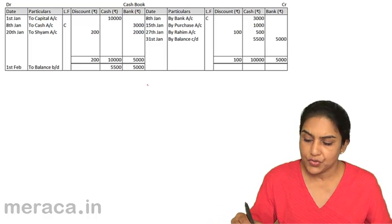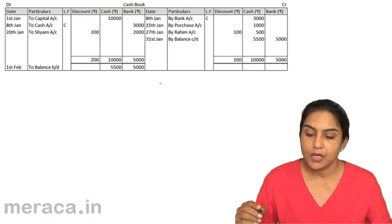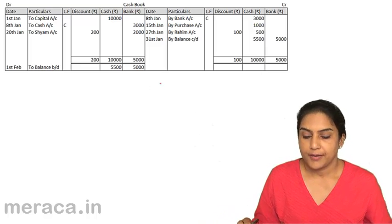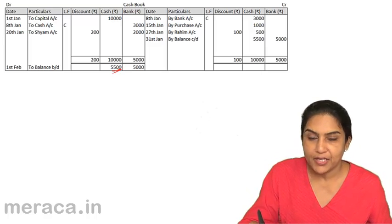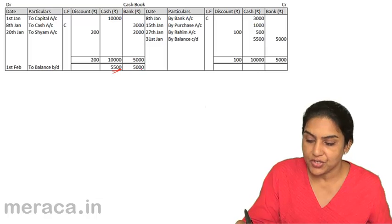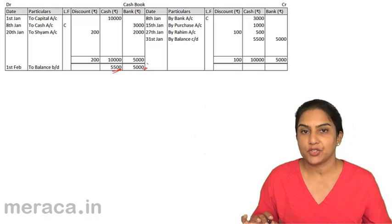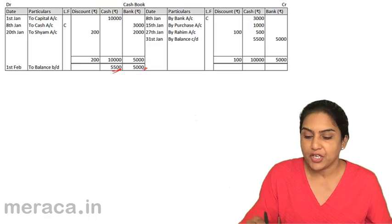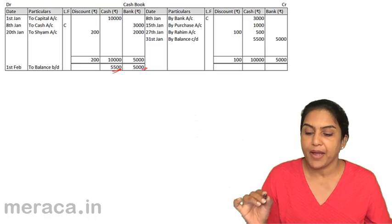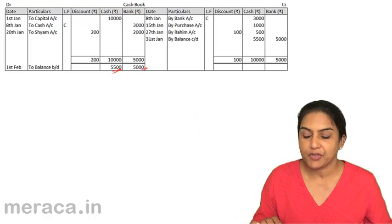How is posting done? This is the cash account, so this is the balance of cash. This is the bank account, so this is the balance of bank. In a trial balance, you have cash balance 5,500 and bank balance 5,000.